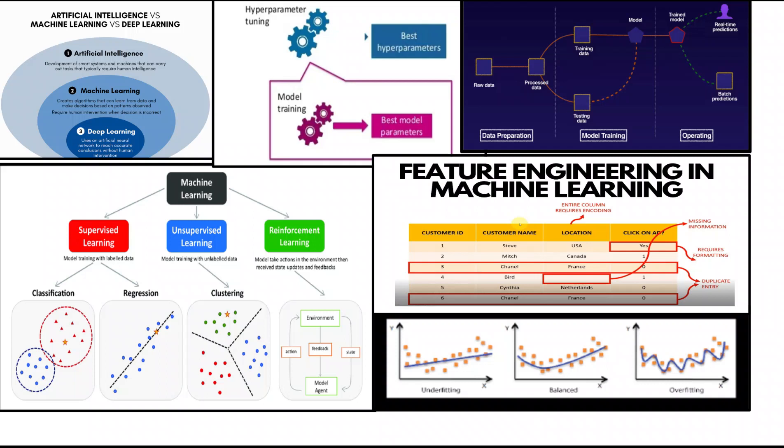Overfitting can be prevented by techniques like regularization, data splitting, and feature selection. Regularization penalizes the model for being too complex, helping prevent it from memorizing the training data perfectly. Data splitting divides the data into training and validation sets — the model is trained on the training set, then evaluated on the validation set. Feature selection removes irrelevant features from the training data, helping prevent the model from learning to fit noise instead of the underlying pattern.